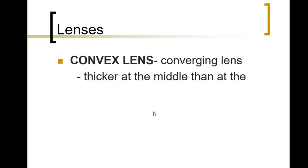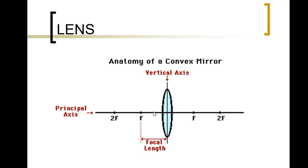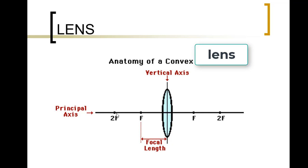Convex lens or converging lens is thicker at the middle than at the edge. Concave lens or diverging lens is thicker at the edge than at the middle. The anatomy of a convex lens includes two sides, a vertical axis, a focus, a focal length from the midpoint to the focus, twice the focal length, and the principal axis.